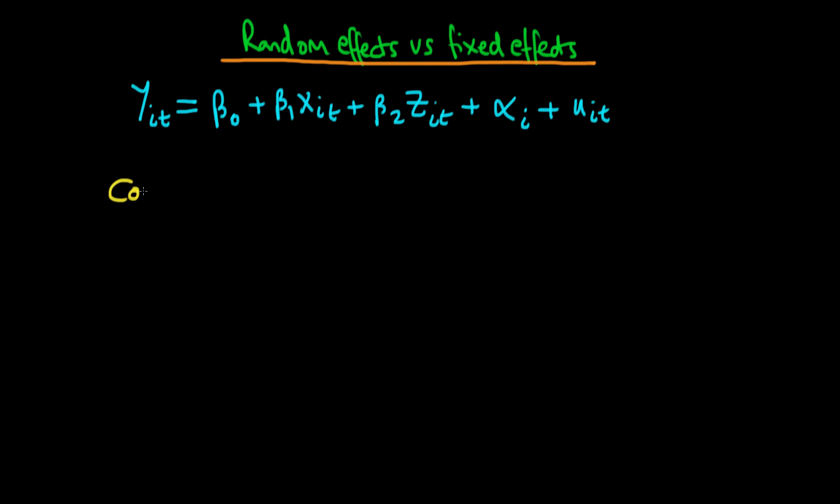So as we've spoken about before, the assumption of random effects is that the covariance between alpha i and the independent variable xit has to be equal to zero. Not only that, we also have to have that the covariance of alpha i with the other independent variable is also equal to zero. And these two assumptions together ensure that beta 1 hat, when the hat here indicates random effects, along with the other assumptions which we need to assume, these two assumptions ensure that the random effects estimates of beta 1 and beta 2 are both consistent.